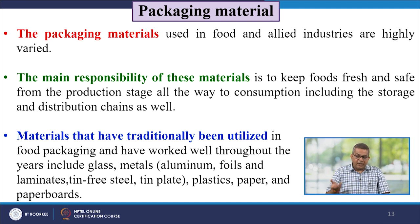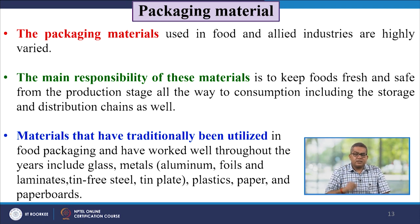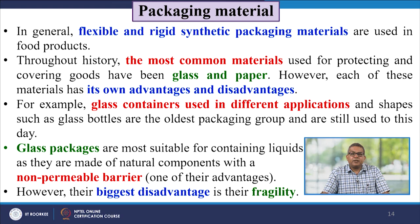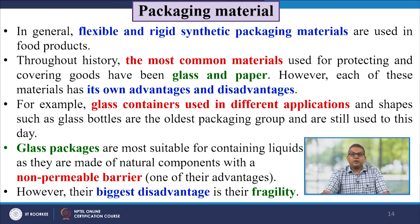Materials traditionally utilized in food packaging include glass, metal, aluminum foils and laminates, tin, free steel, tin plates, plastics, papers and paperboards. In general, flexible and rigid synthetic packaging materials are used in food products. Throughout history, the most common materials used for protecting and covering goods have been glass and paper.